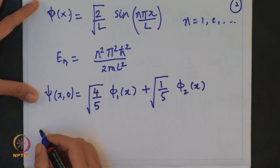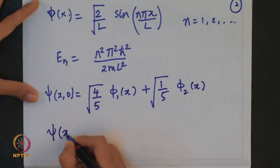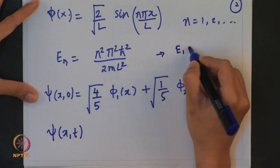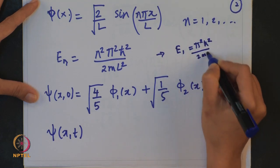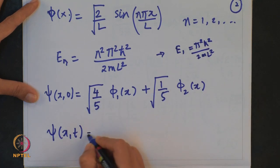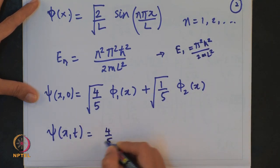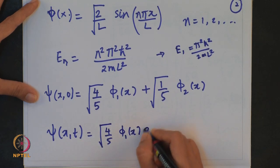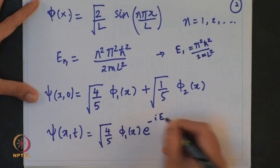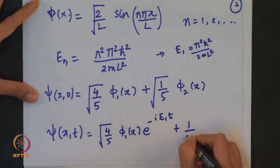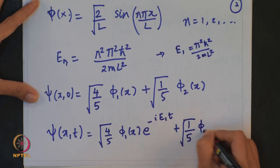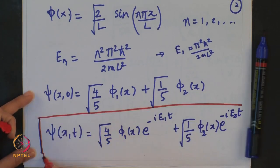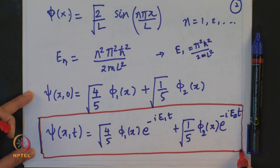Now we have to evaluate the time-dependent wave function ψ(x, t). You can see that E₁ corresponds to π² ℏ² / (2mL²) and similarly for E₂. This can be written as (4/5) φ₁(x) e^(iE₁t) + (1/5) φ₂(x) e^(iE₂t). This is nothing but the time-dependent wave function.